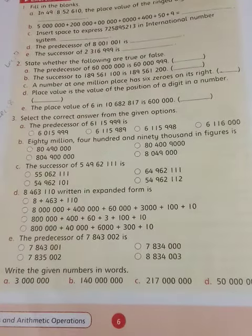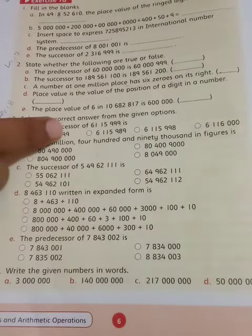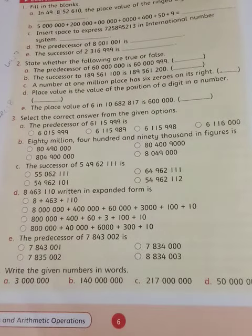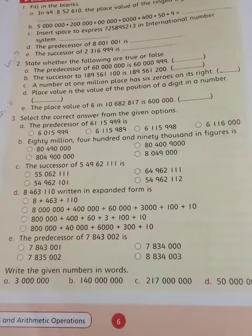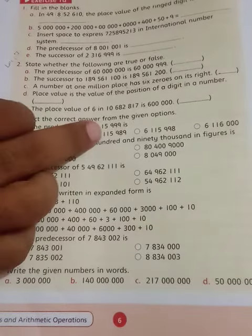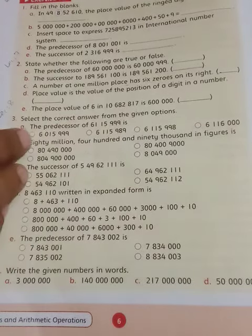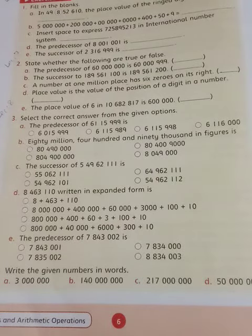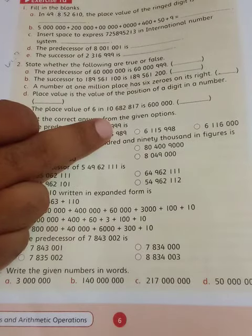The first one, that's A, the predecessor of this number. As I told you in the previous classes, predecessor means one number less. So from this number you have to subtract one number. The correct answer that matches these options will be ticked by you.